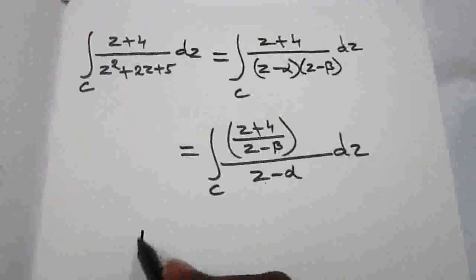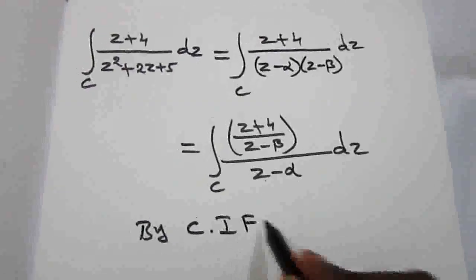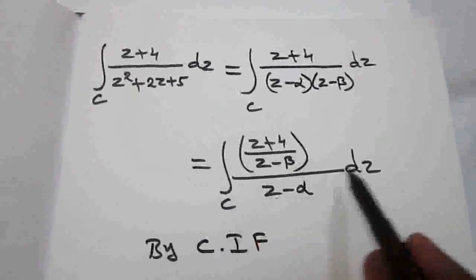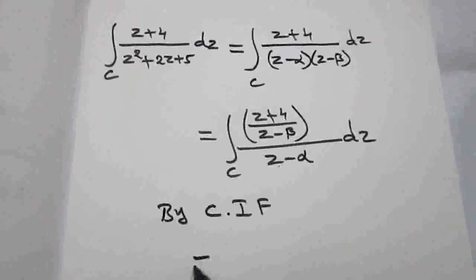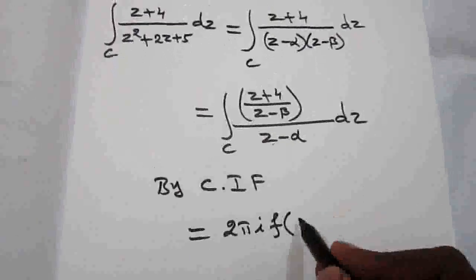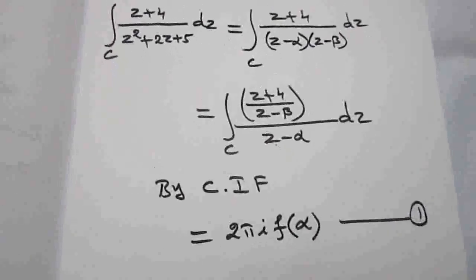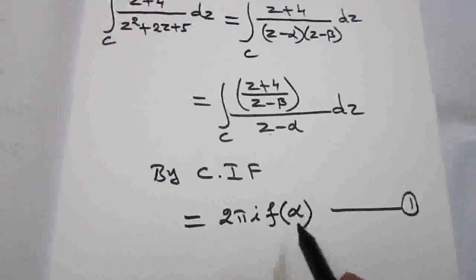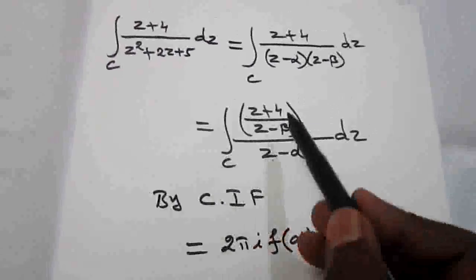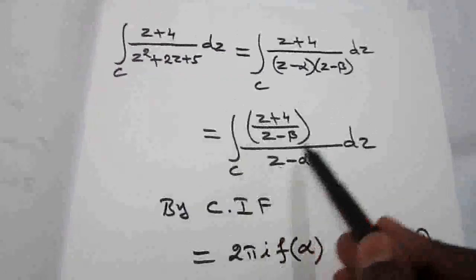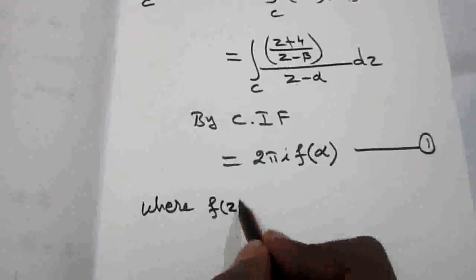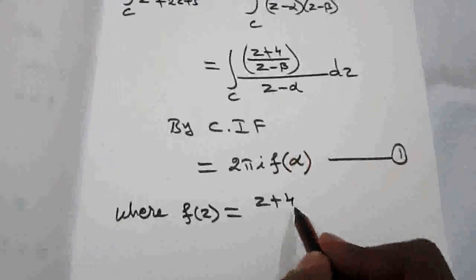By the Cauchy integral formula, integral over C of f(z)/(z - a) dz = 2πi · f(a), where a = α. Here f(z) = (z + 4)/(z - β), so we need to find f(α).